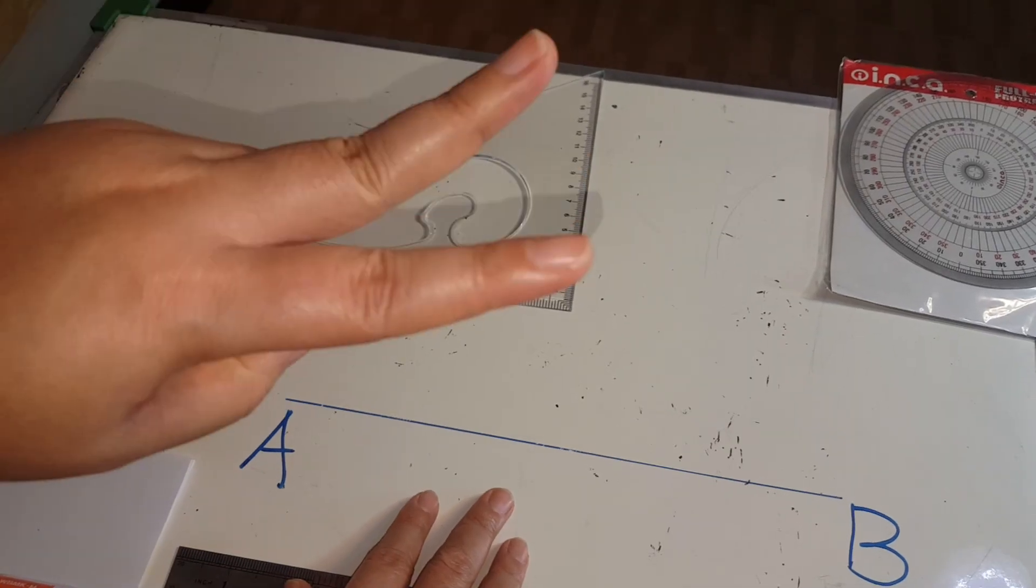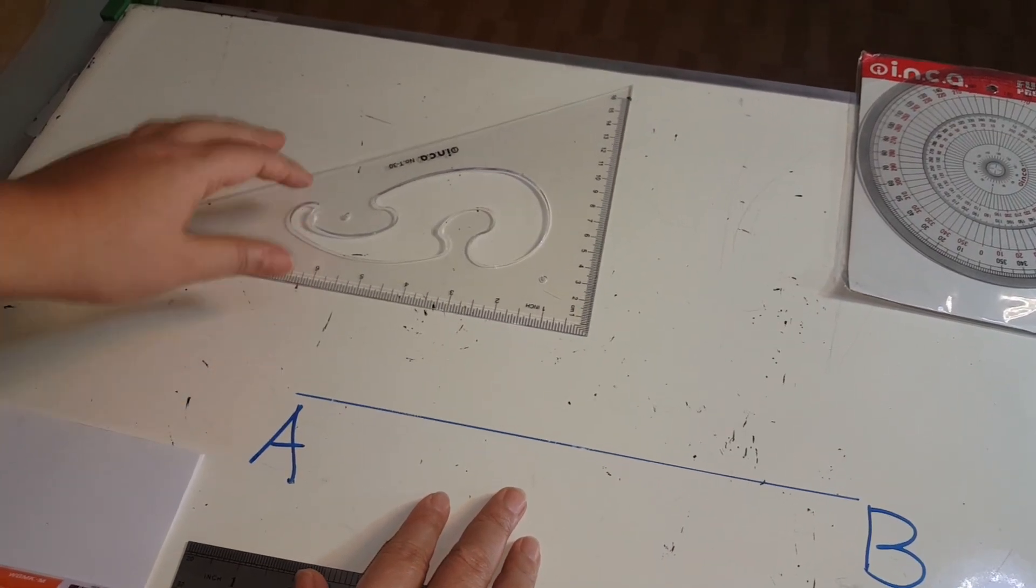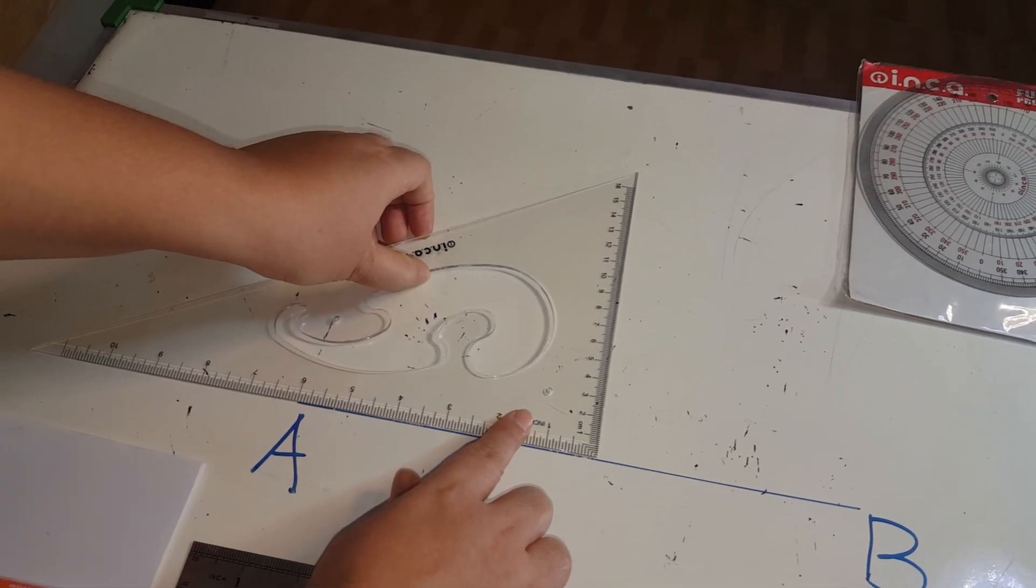Step number two. Put the set square against line AB, like this.